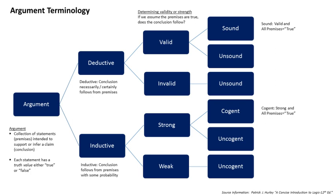Often an argument is invalid because there is a missing premise, the supply of which would render it valid. Speakers and writers will often leave out a strictly necessary premise in their reasonings if it is widely accepted and the writer does not wish to state the blindingly obvious. Example: 'All metals expand when heated, therefore iron will expand when heated' — missing premise: iron is a metal. On the other hand, a seemingly valid argument may be found to lack a hidden assumption which, if highlighted, can show a fault in reasoning. Example: a witness reasoned 'Nobody came out the front door except the milkman, therefore the murderer must have left by the back door' — hidden assumptions: the milkman was not the murderer, and the murderer left by the front or back door.